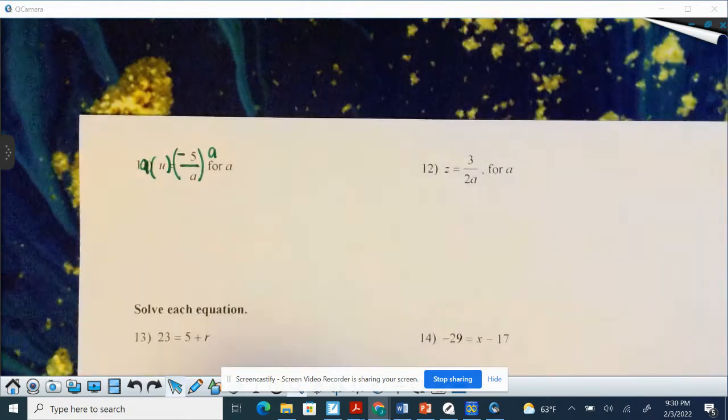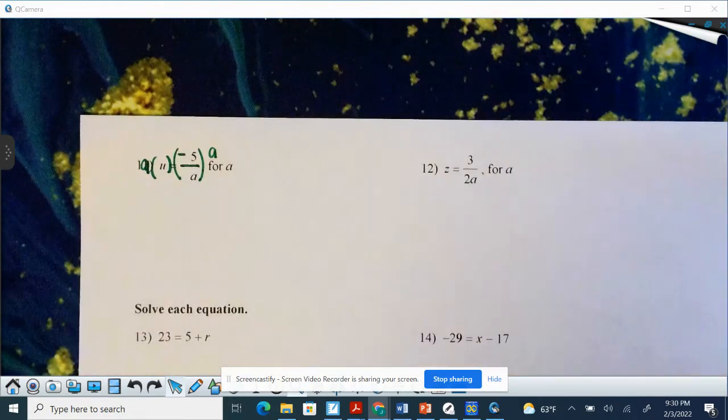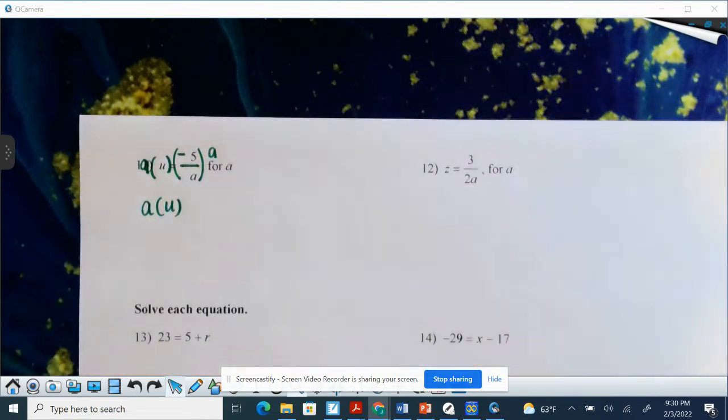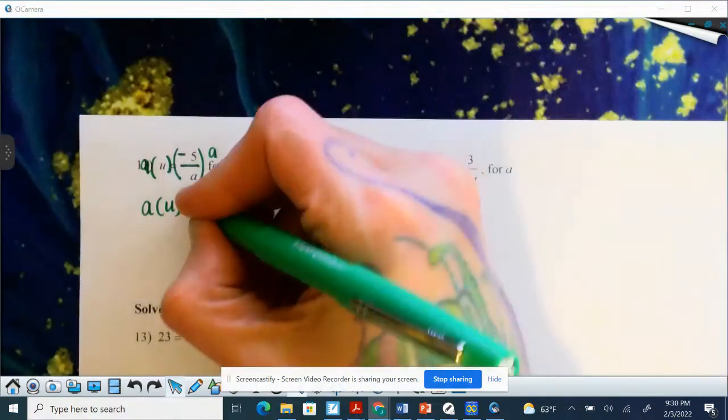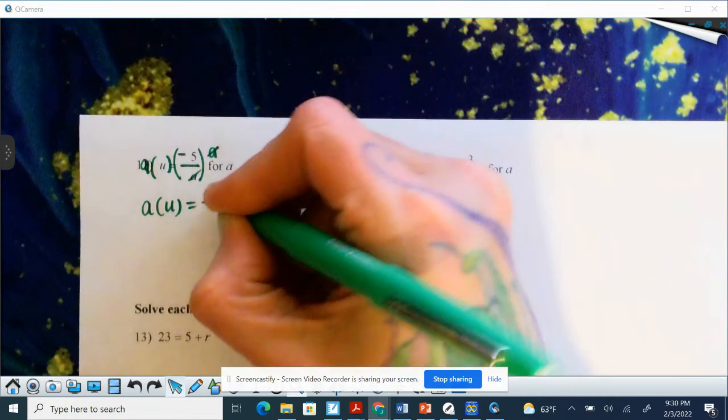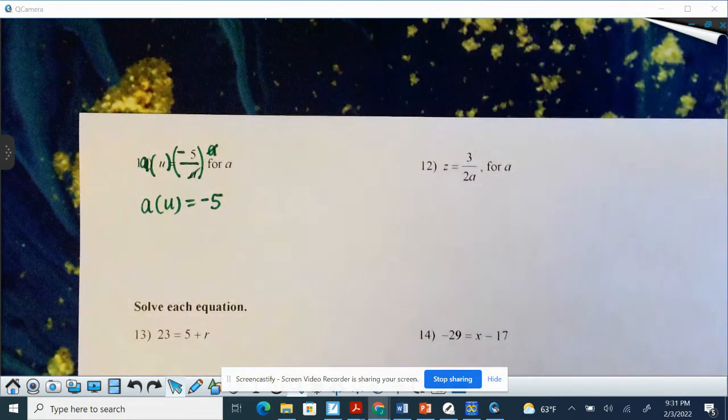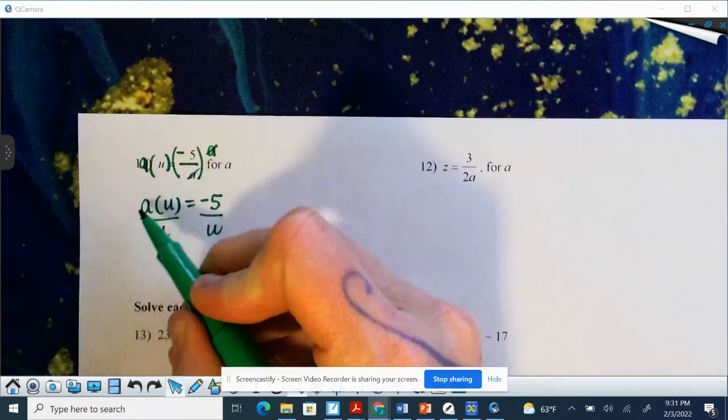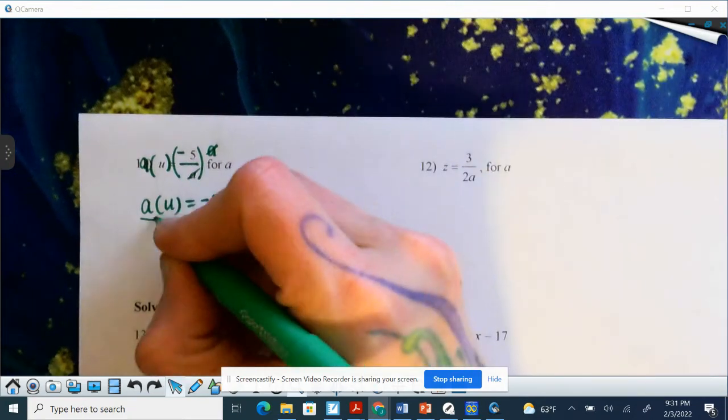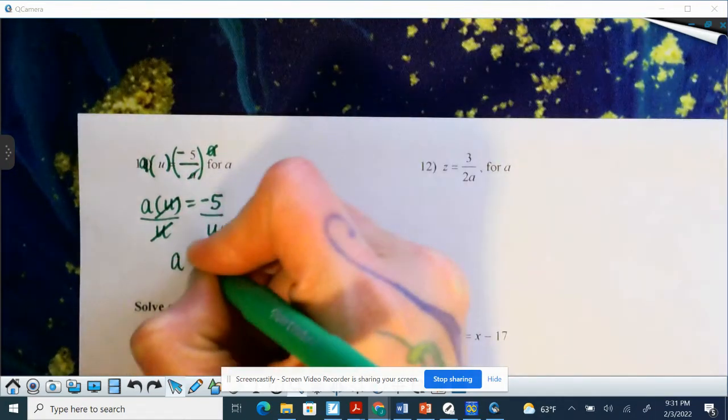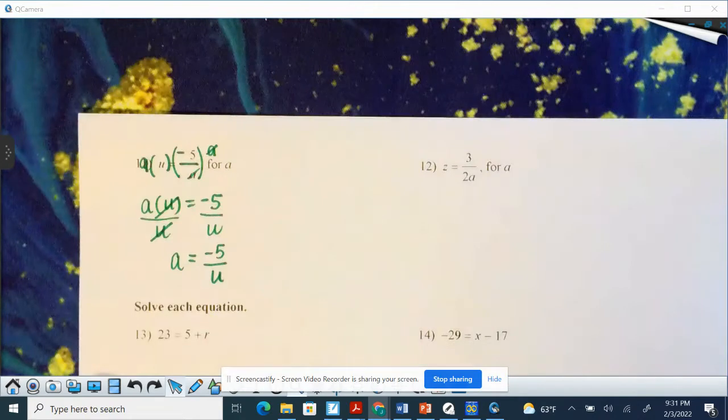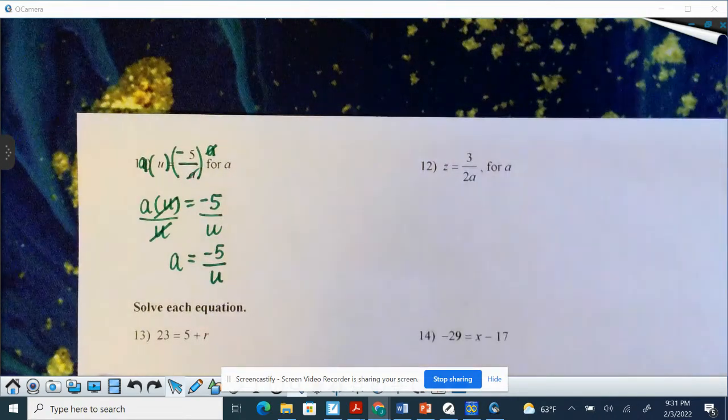And again, these are literal because you have two variables. So we're not going to have an a equals a number by itself. You can't throw out other variables. So I now have a times u, and you can write in parentheses if you want or just au equals. These a's go away. So negative 5. Now your question for yourself, is a by itself? It is not. So we're going to divide by u, because a times u in the inverse of multiplication is division. So a equals negative 5 over u. Is a by itself? It is indeed. So we are done.